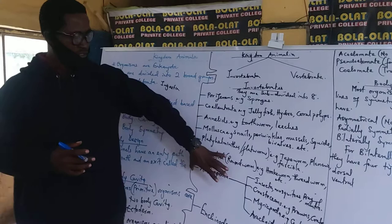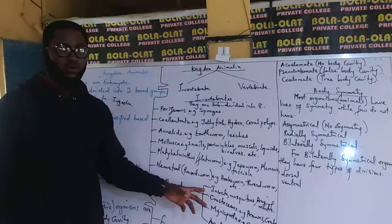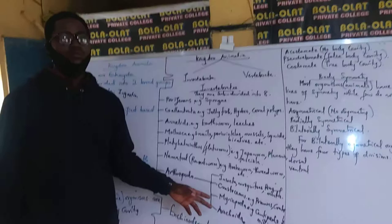Now this is a group I love talking about under invertebrates. Class Arthropoda is subdivided into four. You have your Insecta, you have your Crustacea, you have your Myriapoda, and you have your Arachnida.